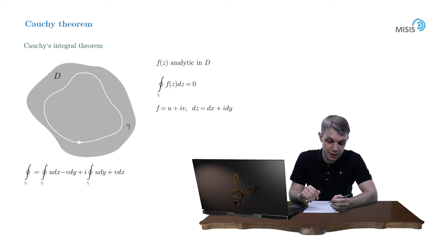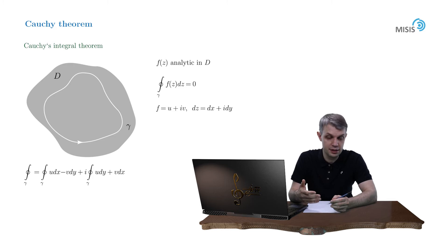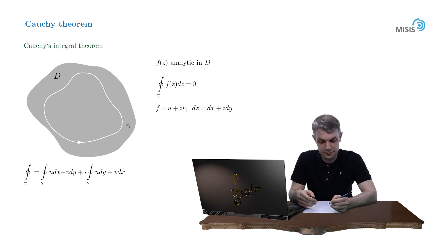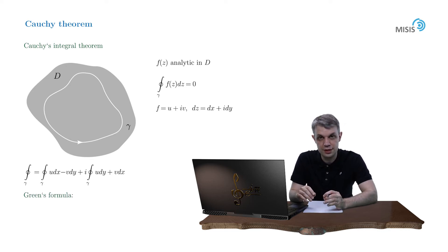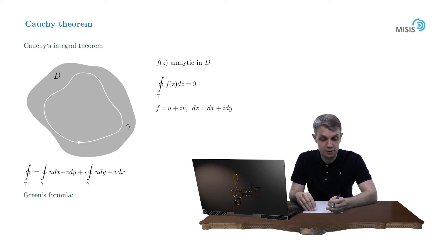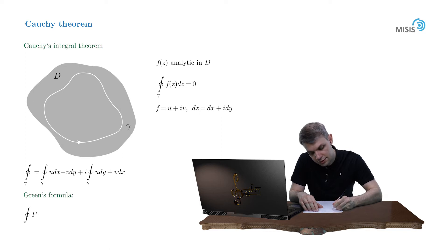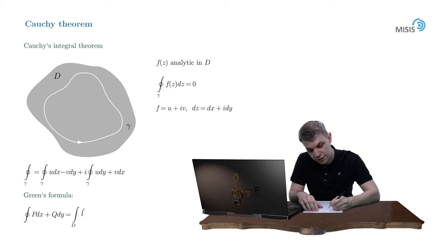We are dealing here with two real-valued two-dimensional integrals along some contour in the two-dimensional plane. Green's formula allows us to transform these kinds of linear closed contour integrals into area integrals over the surface bounded by that contour. Green's theorem states that a linear closed contour integral of p·dx plus q·dy can be transformed into an area integral of ∂q/∂x minus ∂p/∂y over the surface circumvented by the contour.